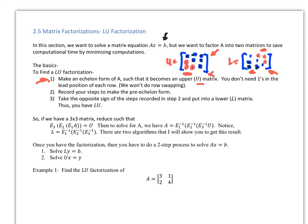We record the steps we took to get zeros in the upper matrix, then put those into a matrix with opposite signs — in other words, the inverse — to find the lower matrix L. Once we have LU, we can go ahead and solve systems from there.